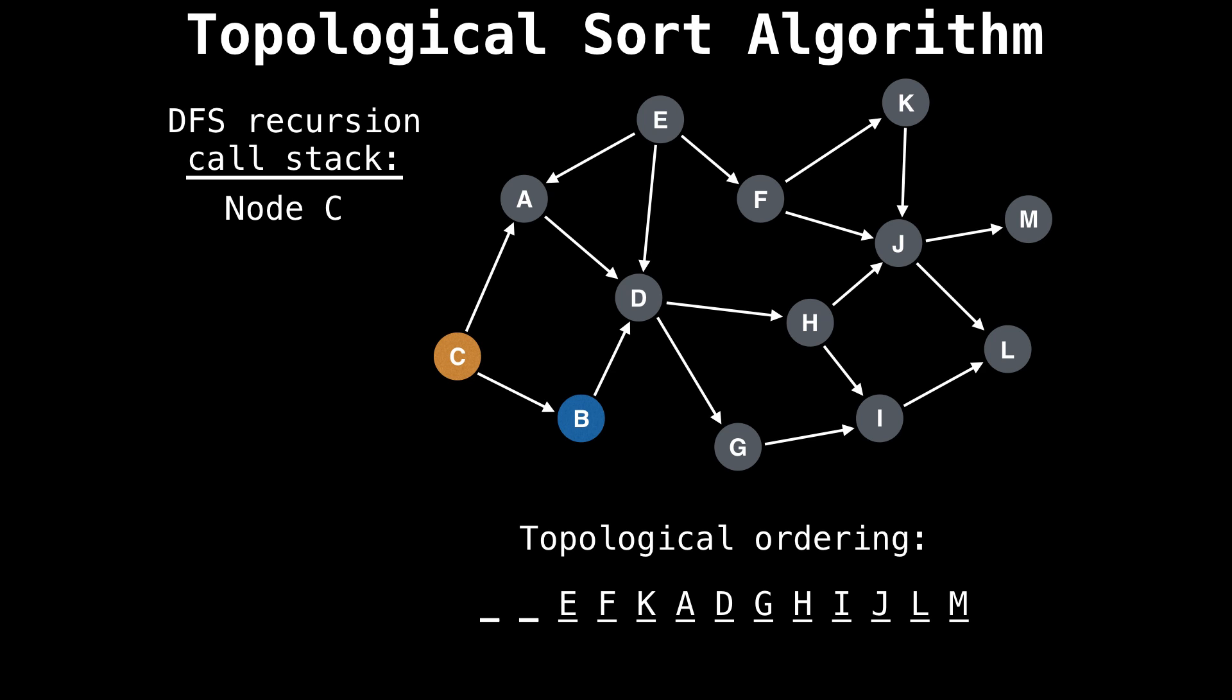So that's it for that subsection of the graph. The next node I'm going to pick is going to be node C to visit. So we start node C and explore this subsection of the graph. Now that all nodes are visited, we have a valid topological ordering at the bottom of the screen.